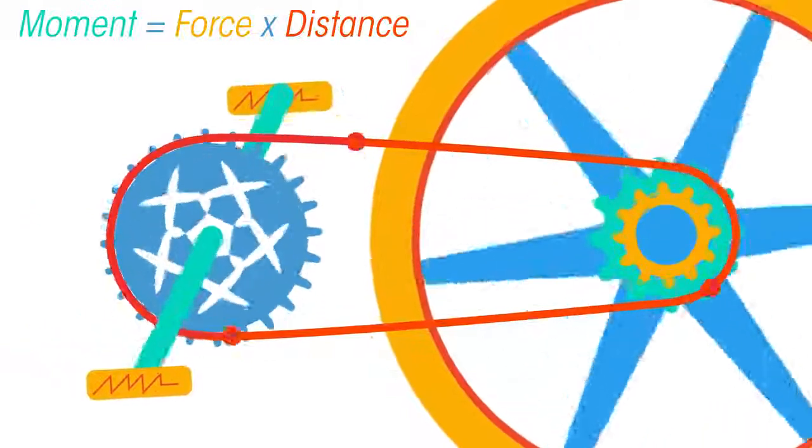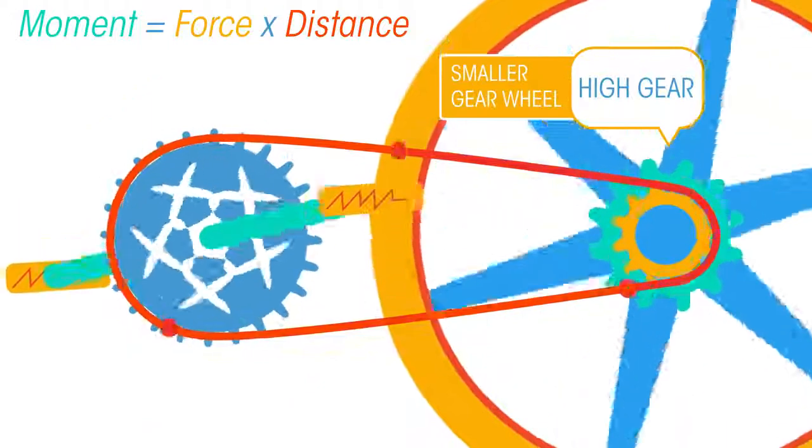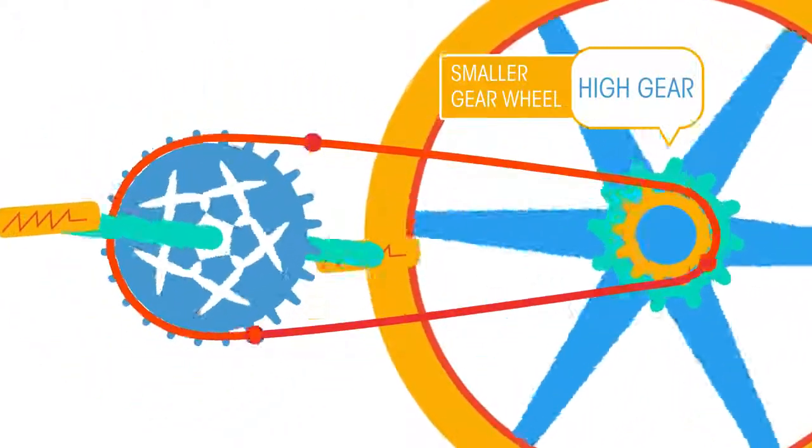Whereas to go quickly, you select a higher gear, which is a smaller gear wheel. Your force gives a smaller moment, but turns the wheel much more quickly.